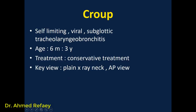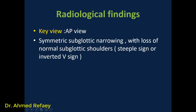The key view for croup is the anteroposterior view, not lateral view as in epiglottitis. The radiological finding is symmetric subglottic narrowing with loss of the normal subglottic shoulders. This is known as the steeple sign or inverted V sign.